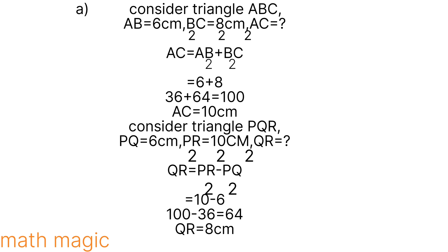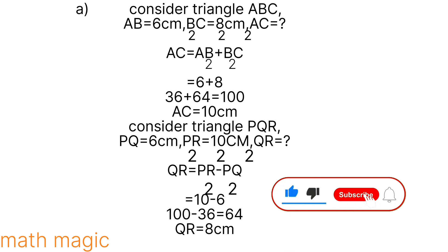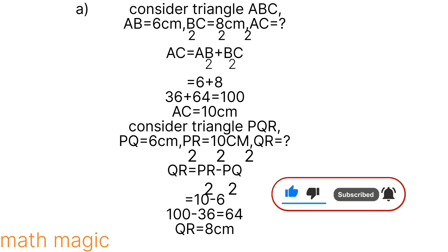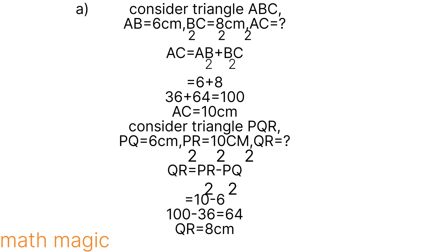AC is 10 cm. Now consider triangle PQR: PQ is 6 cm and PR is 10 cm, QR is unknown. Altitude squared equals hypotenuse squared minus base squared. QR squared equals PR squared minus PQ squared equals 10 squared minus 6 squared equals 100 minus 36 equals 64. QR equals square root of 64, so QR equals 8 cm.